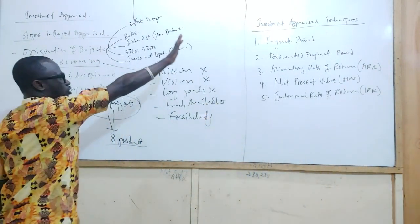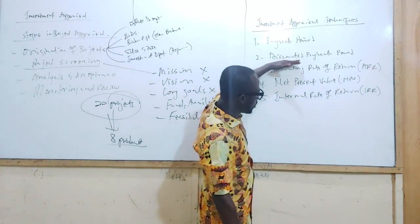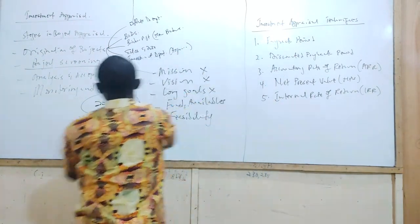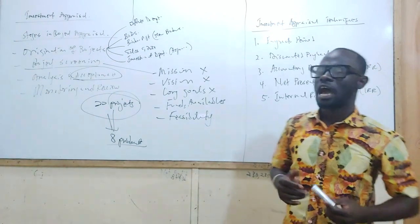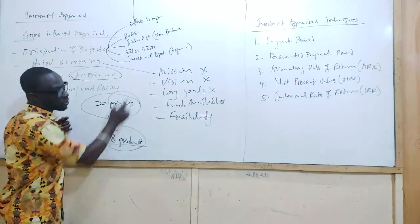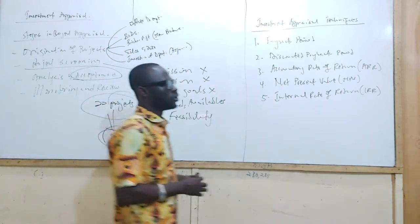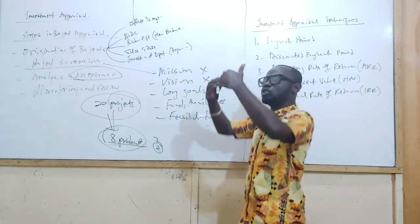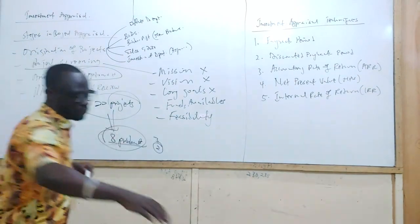Today we are going to cover payback and discounted payback, and then next week we will conclude with the others. As we go through each method, I'll give you the rule so we can decide whether to accept or reject a project. Once we complete the appraisal, these eight projects may be reduced to three or two — and those are the ones the company will implement. We are assuming all projects are mutually exclusive for now; we will get to mutually inclusive projects later.